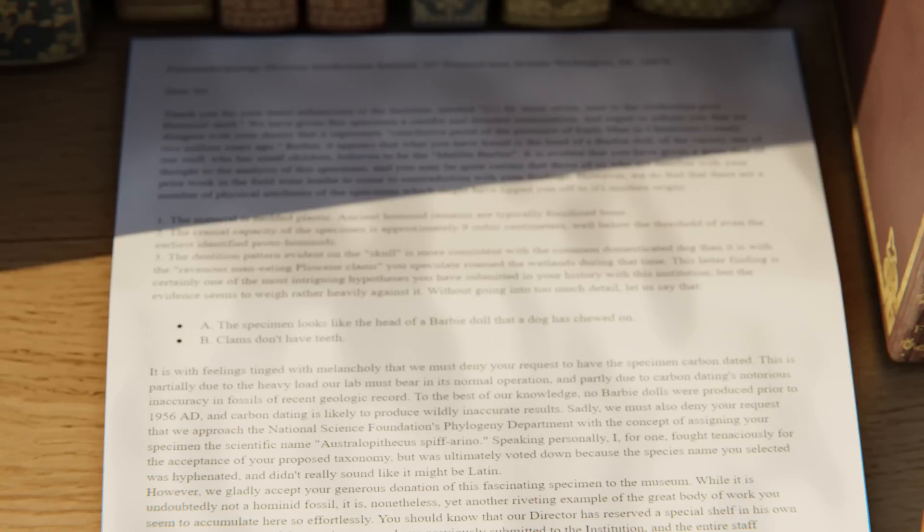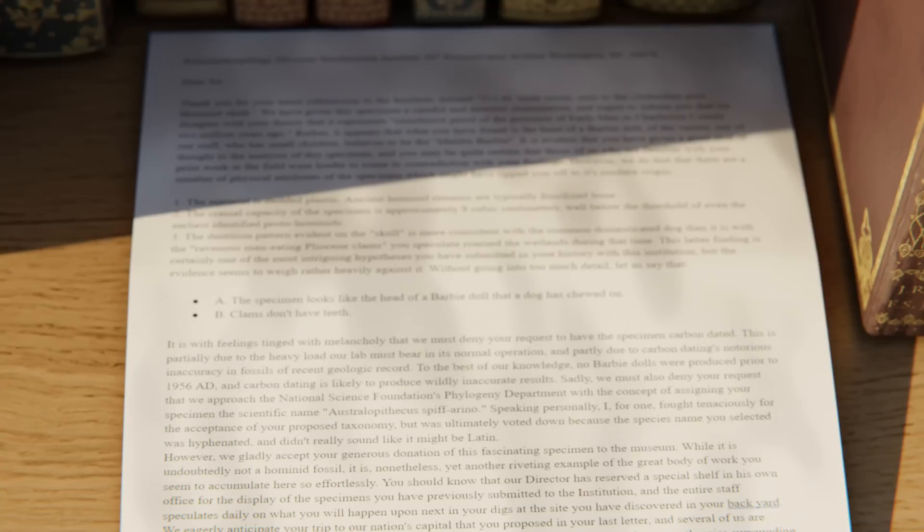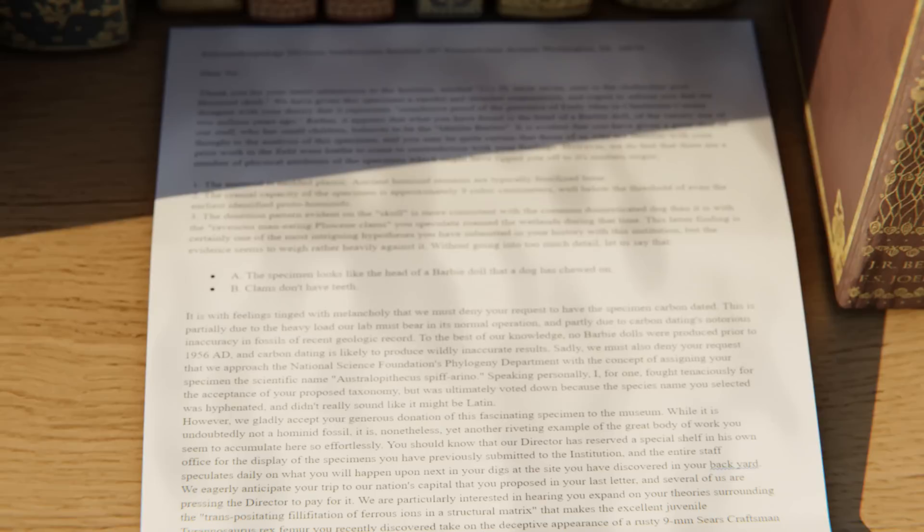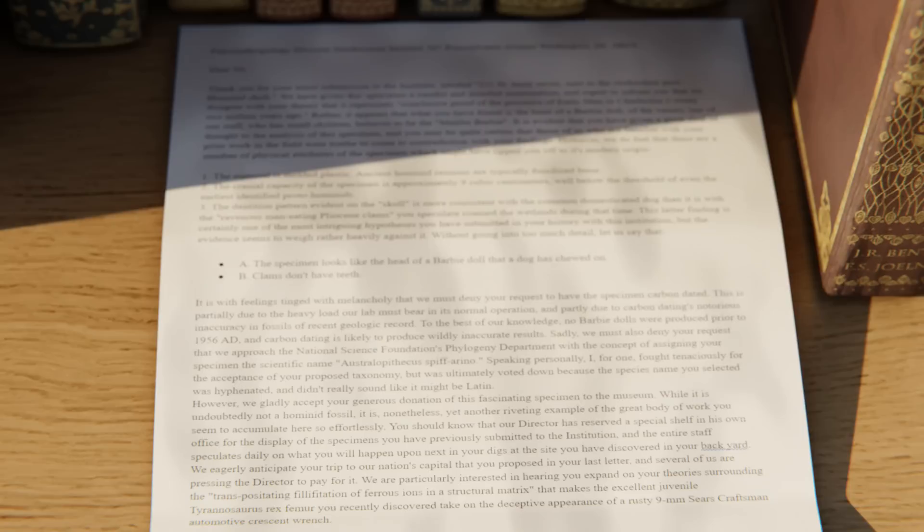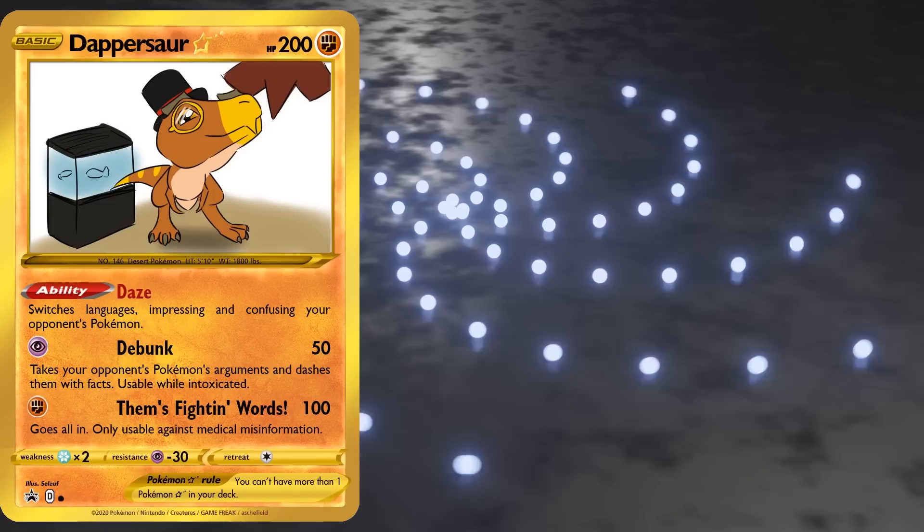However, we gladly accept your generous donation of this fascinating specimen to the museum. While it is undoubtedly not a hominid fossil, it is nonetheless yet another riveting example of the great body of work you seem to accumulate here so effortlessly. You should know that our director has reserved a special shelf in his own office for the display of specimens you have previously submitted to the institution, and the entire staff speculates daily on what you will happen upon next in your digs at the site you have discovered in your backyard. We eagerly anticipate your trip to our nation's capital that you proposed in your last letter, and several of us are pressing the director to pay for it. We are particularly interested in hearing you expand on your theories surrounding the transplositating filifitration of ferrous ions in a structural matrix that makes the excellent juvenile Tyrannosaurus rex femur you recently discovered take on the deceptive appearance of a rusty 9mm Sears Craftsman automotive crescent wrench. Yours in science, Harvey Rowe, Curator Antiquities.